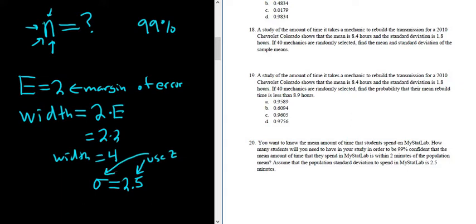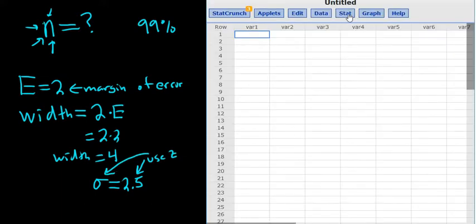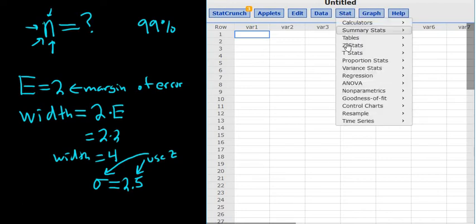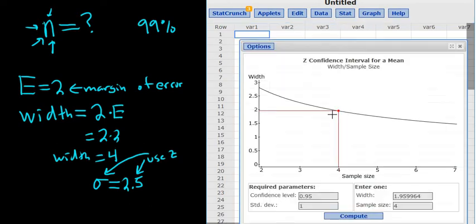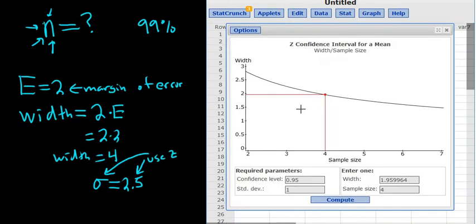So we go to StatCrunch. And we go to Stat, Z. And we have one sample. And we have the width and we're looking for the sample size. Let me do that again. It's Stat, Z, one sample with sample size. Click here.